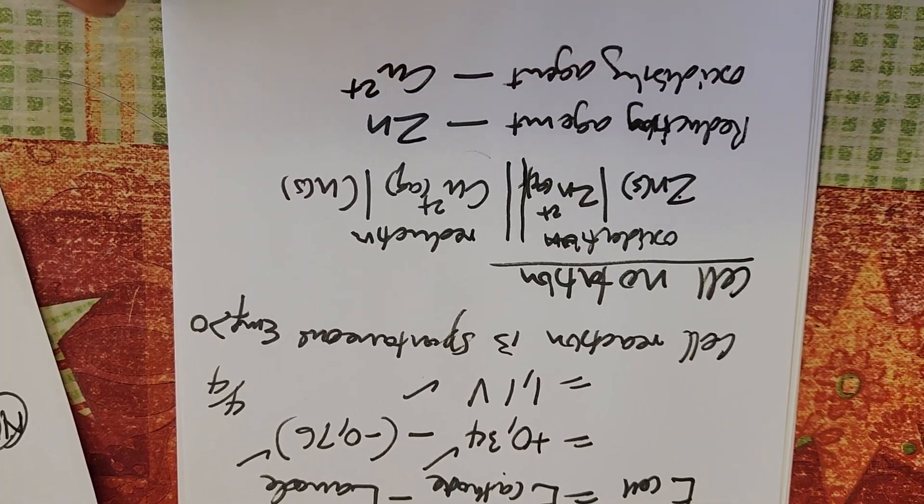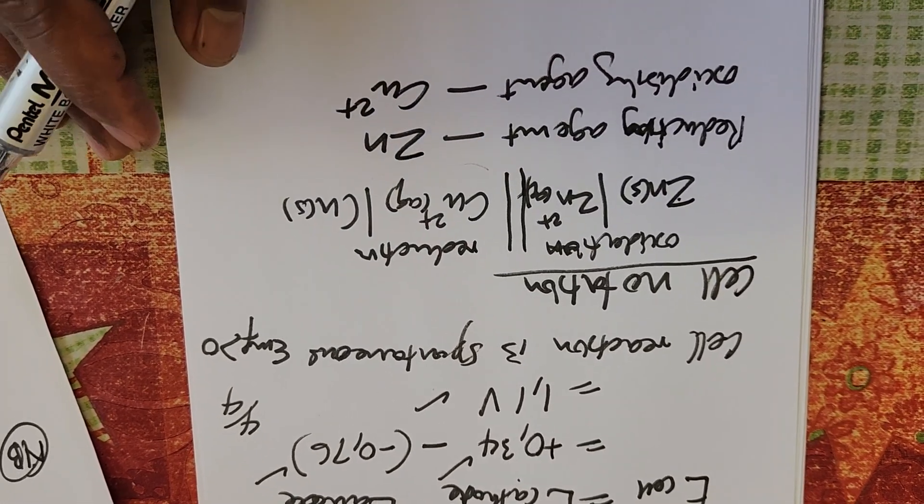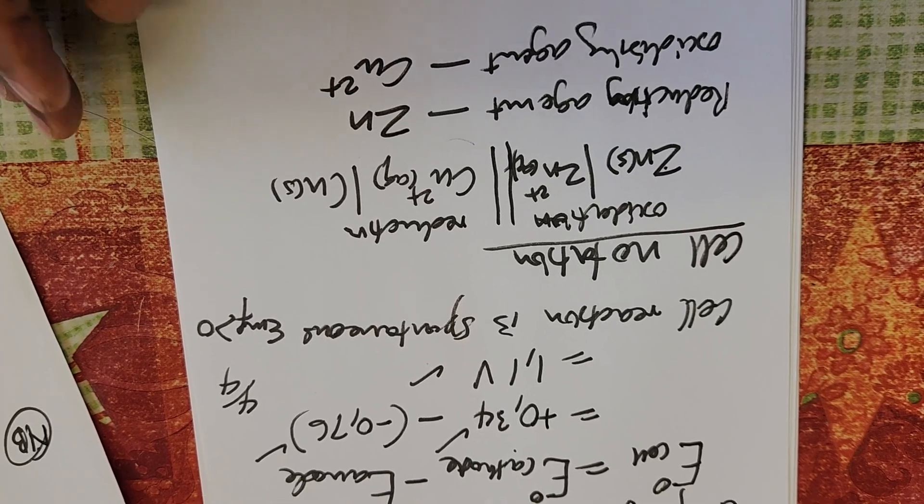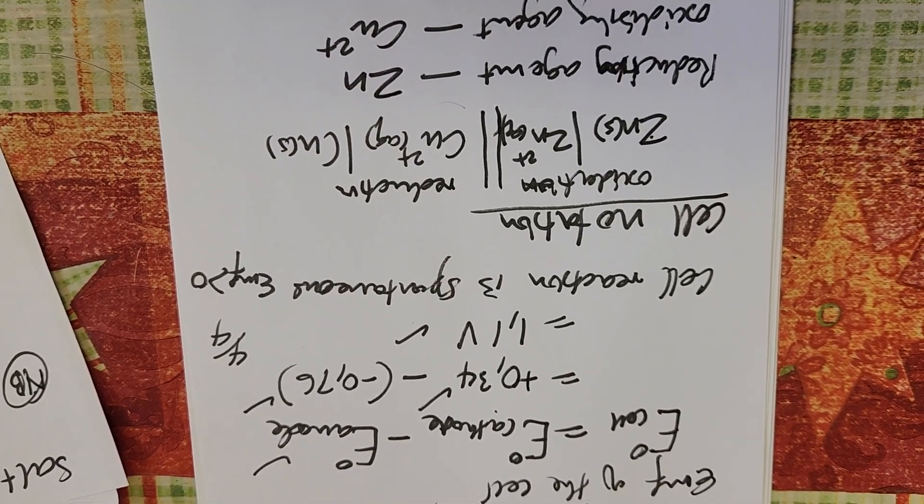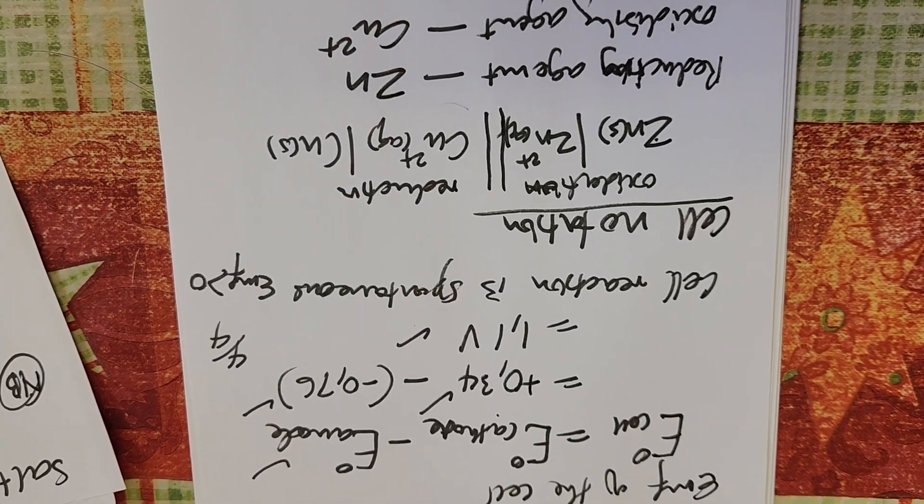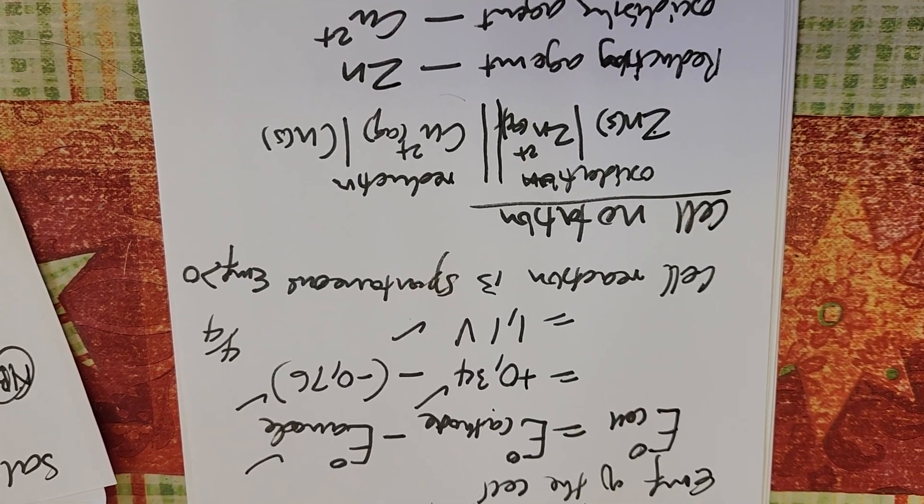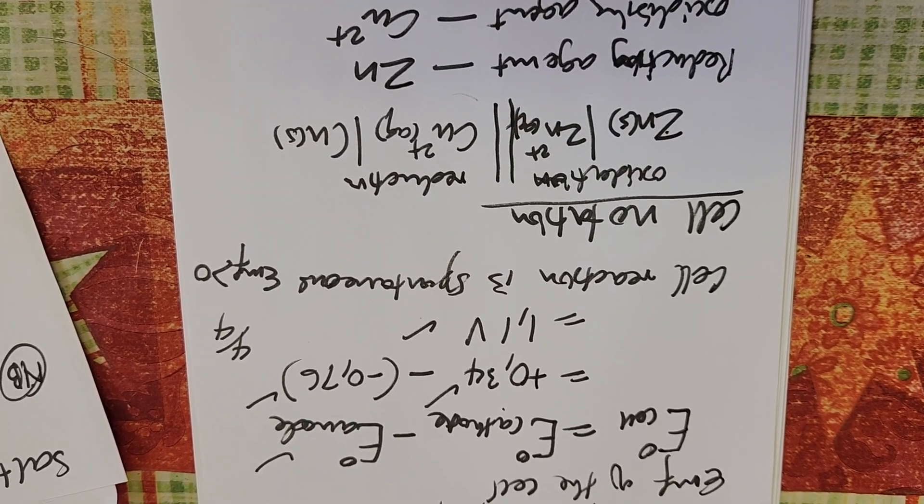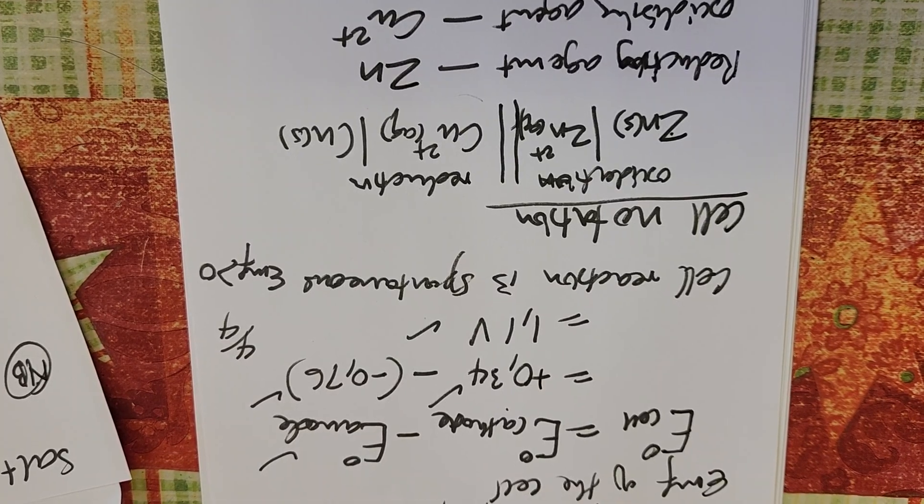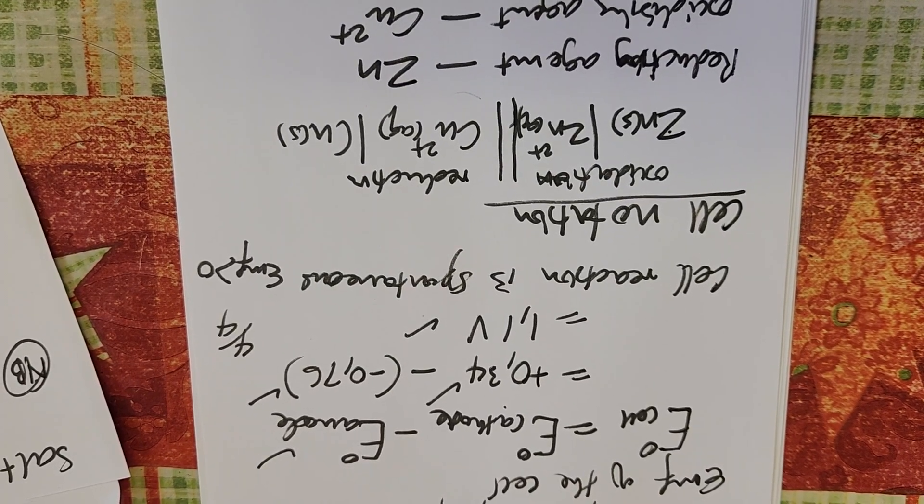In this cell, they can now ask you about what happens when you increase the concentration. Remember the balanced equation here: zinc plus copper ion forms zinc ion plus copper.